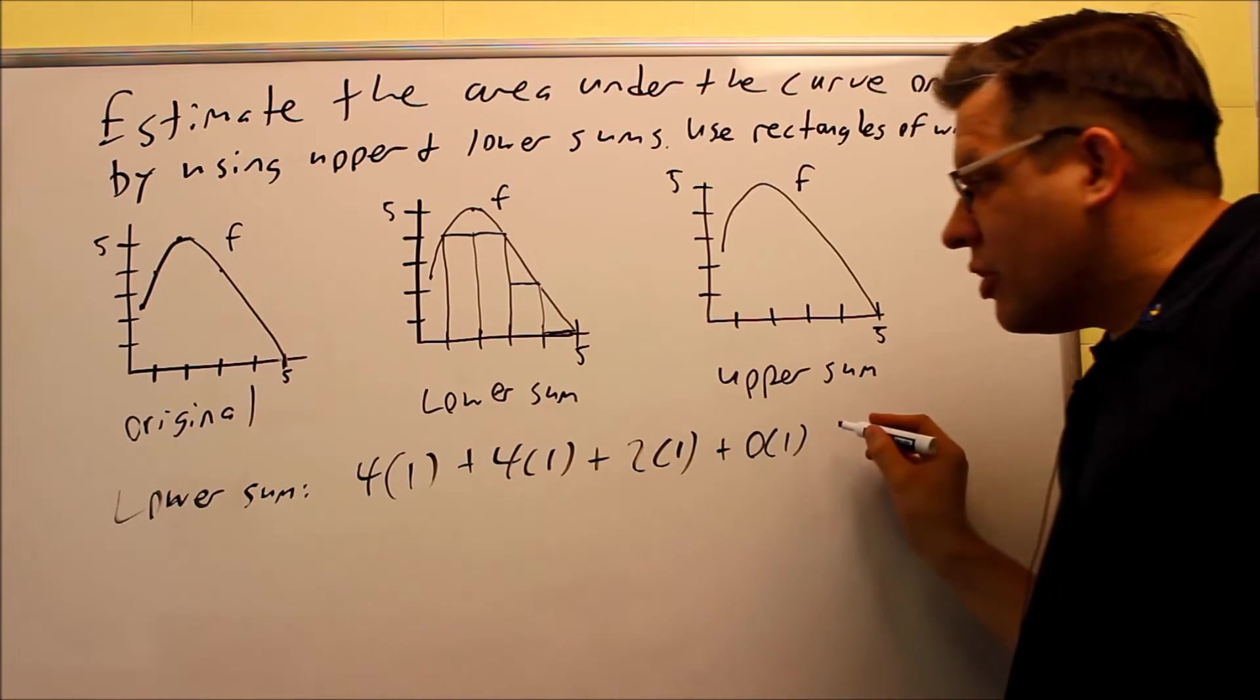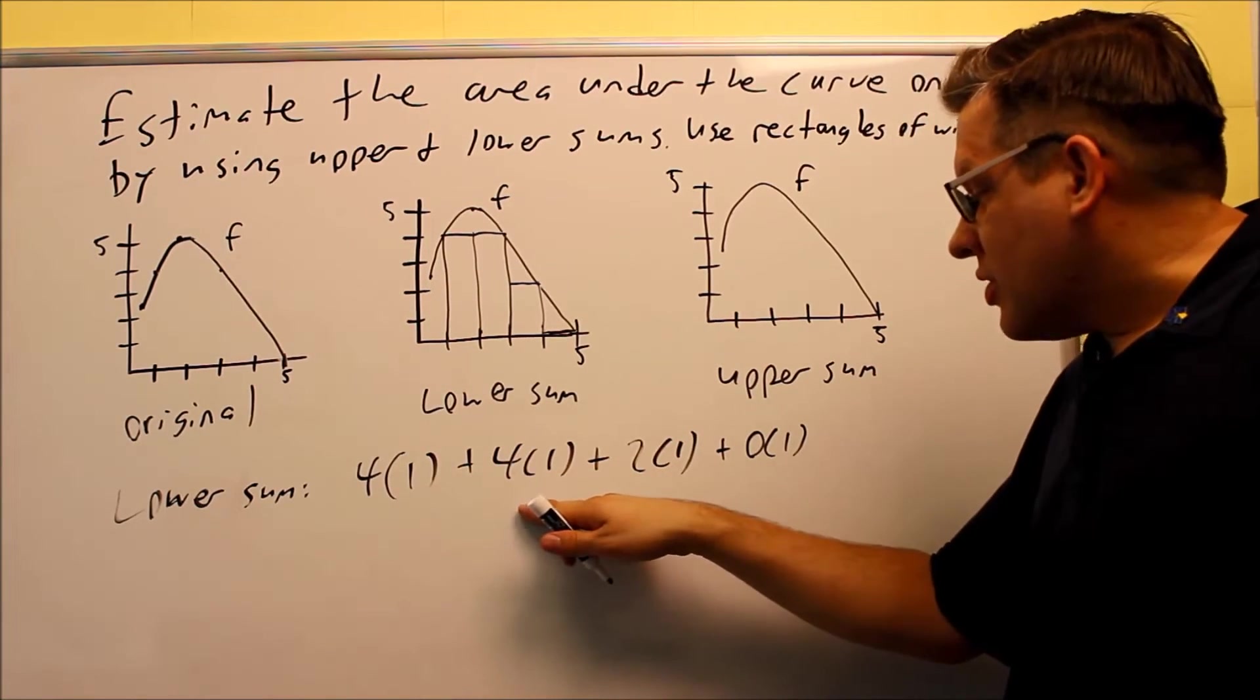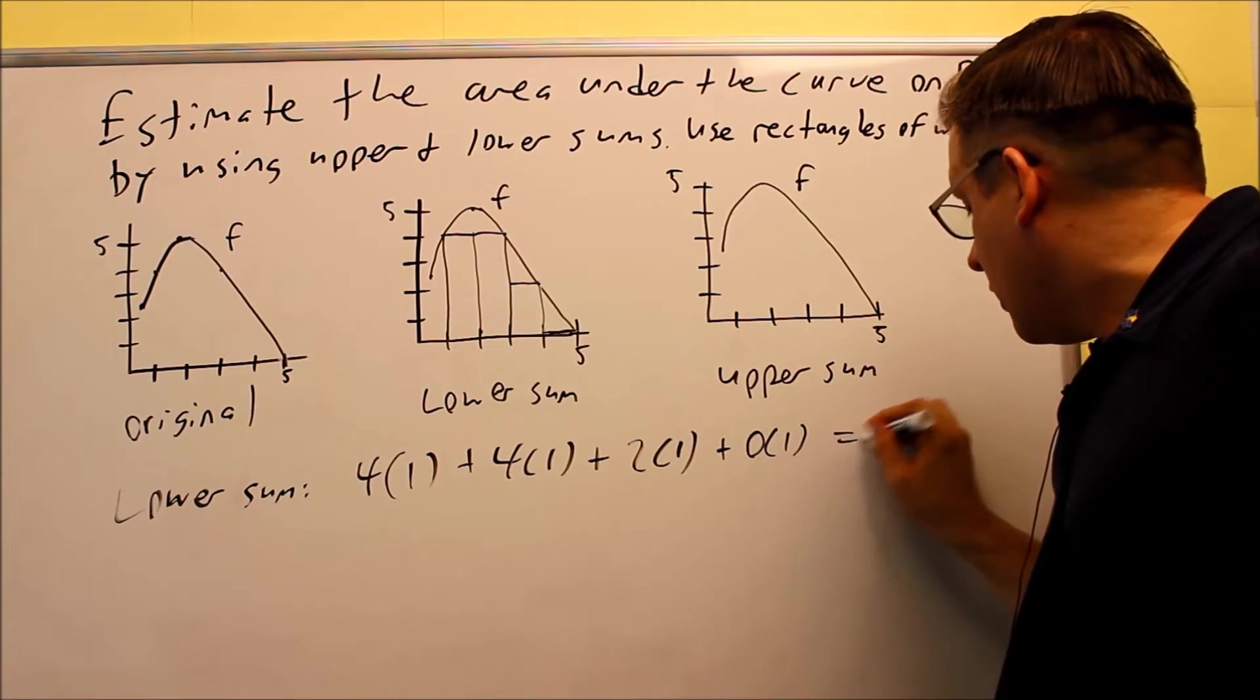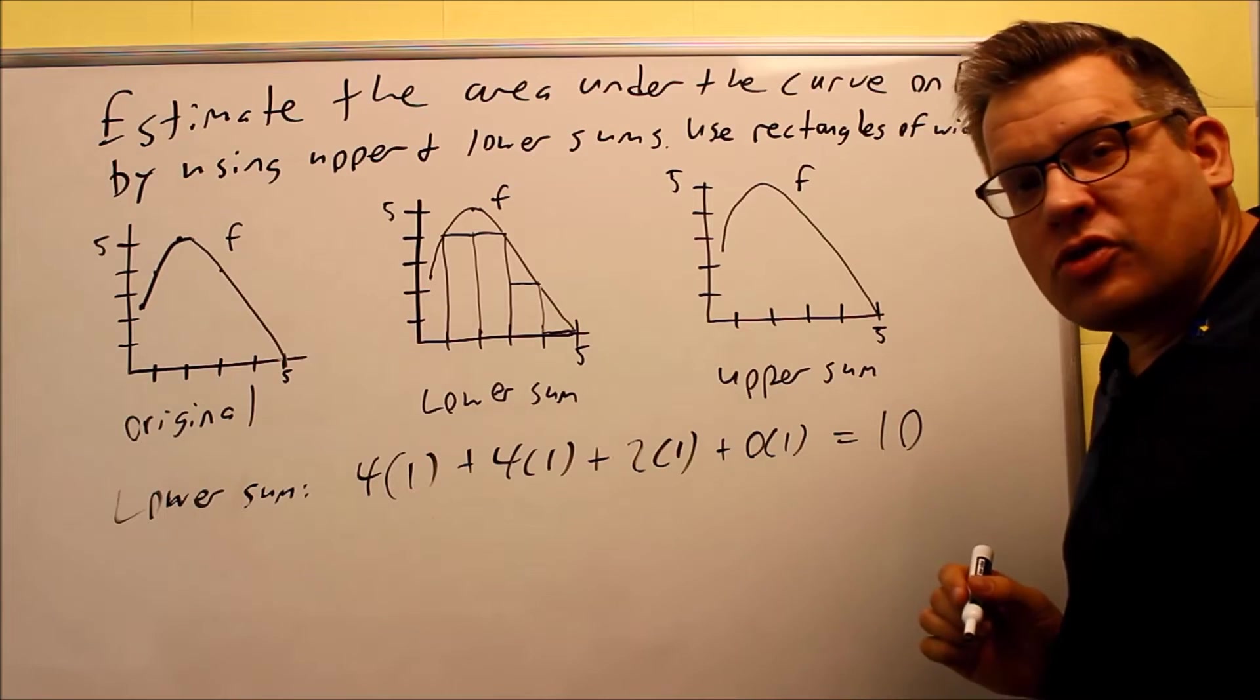So, this is how you would set that up with lower sums. So, 4 plus 4 is 8, plus 2 is 10, plus 0. So, 10 is going to be the area using lower sums.